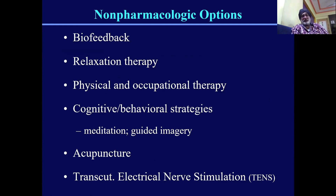Non-pharmacological options like acupuncture and TENS are useful mainly in localized pains such as myofascial pain or phantom limb pain. General non-pharmacological options include relaxation therapy and biofeedback, though these require the patient to trust in meditation or relaxation for them to work.